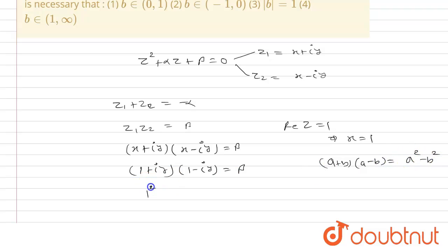We know that a plus b multiplied by a minus b equals a square minus b square. So that will be 1 square minus iota square y square equals beta. And we know that iota square equals minus 1. So this will be 1 plus y square equals beta.